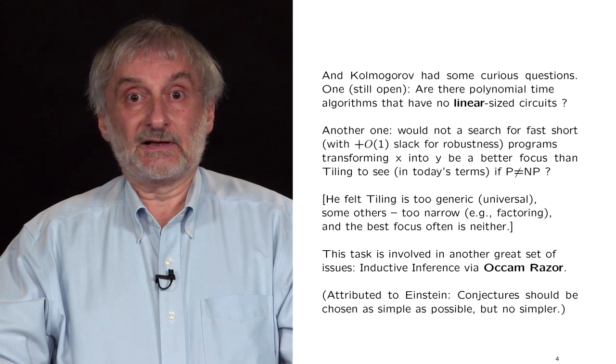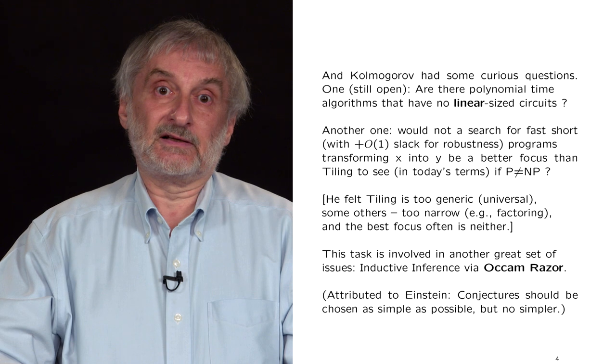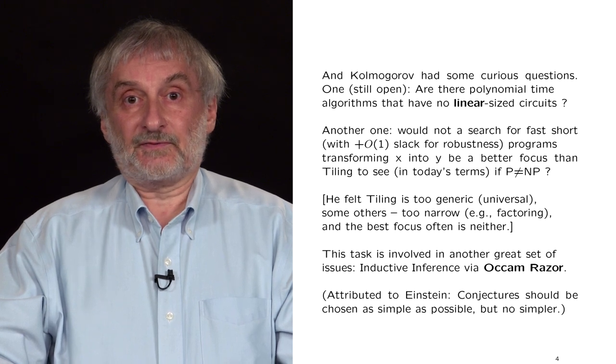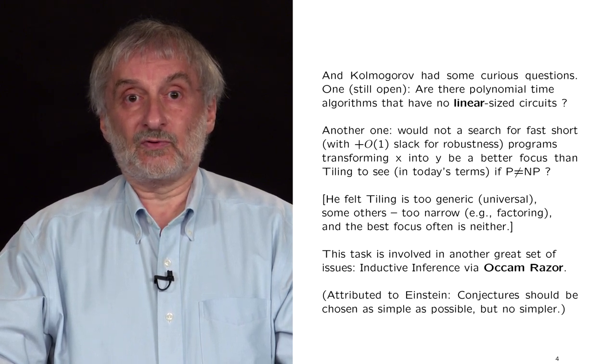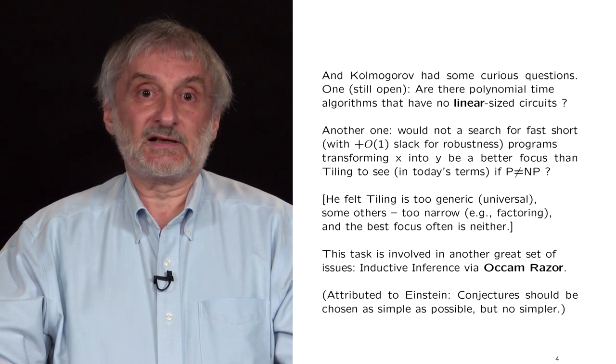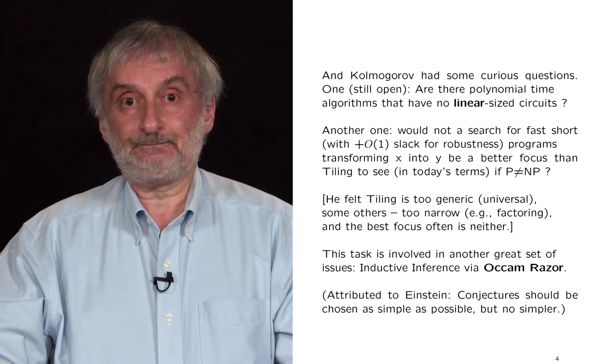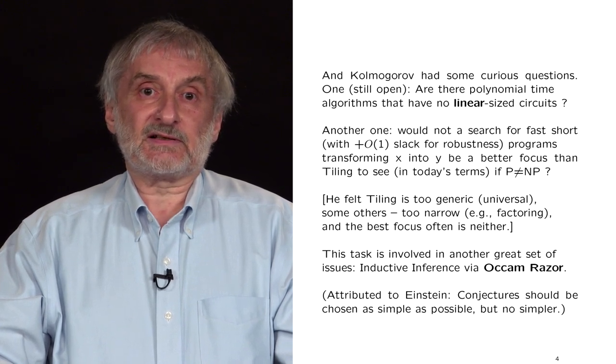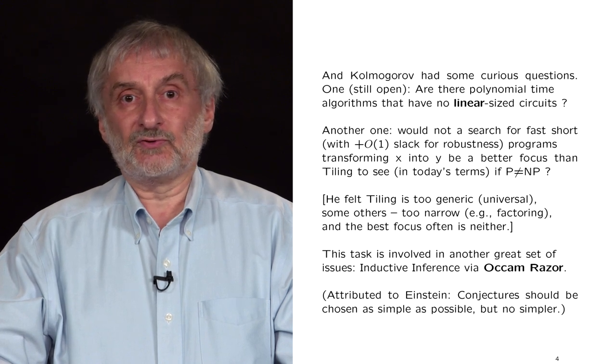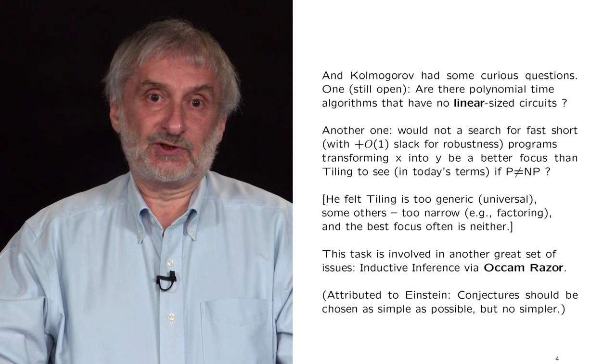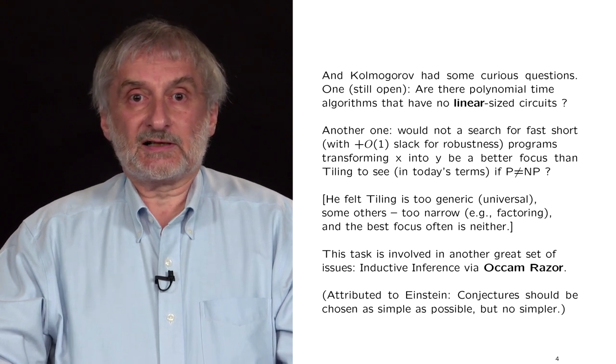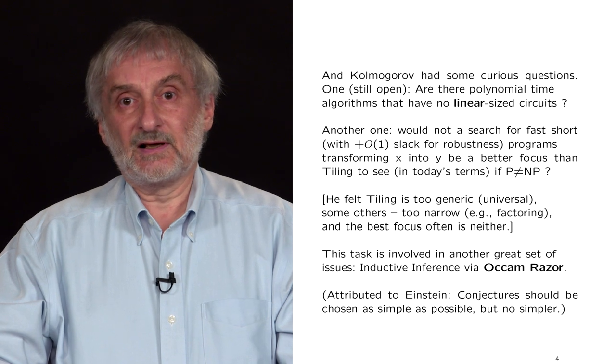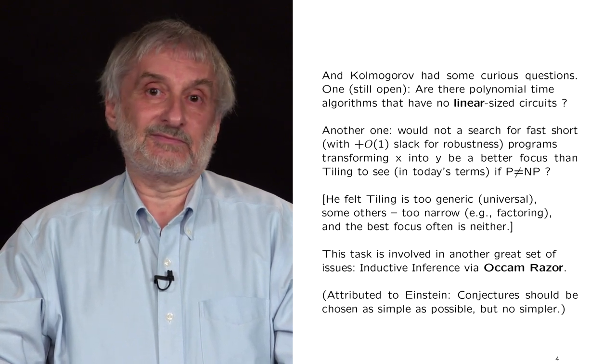Kolmogorov wondered if this would not be a better candidate than my tiling to see if search problems are exponentially hard. Short fast, by the way, were meant to be robust, tolerating additive constant slacks in length and logarithm of time. Kolmogorov said that often good candidates to consider is that is neither too general nor too narrow. Tiling being universal may be too general, lacking focus. Some other problems, say factoring, too narrow, and search for fast short programs looked like a good middle bet to him. It still does to me.